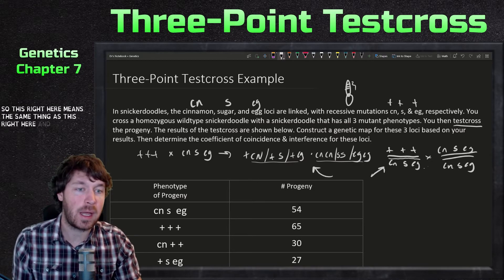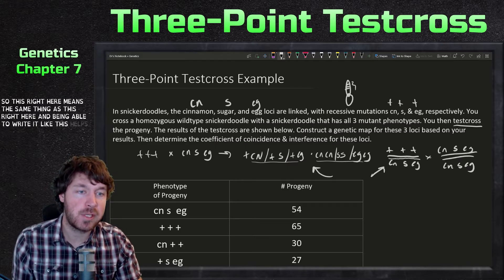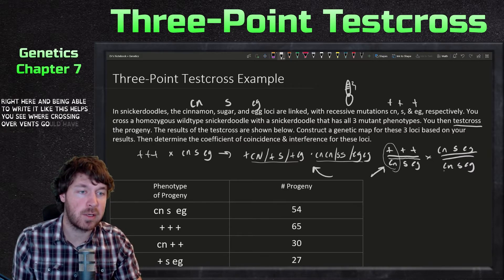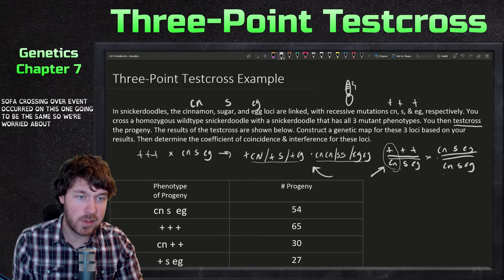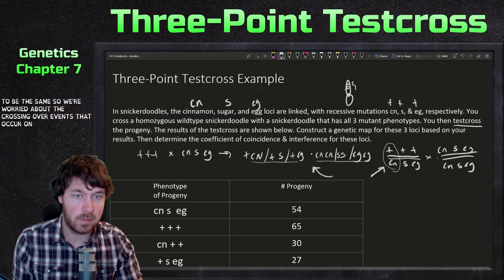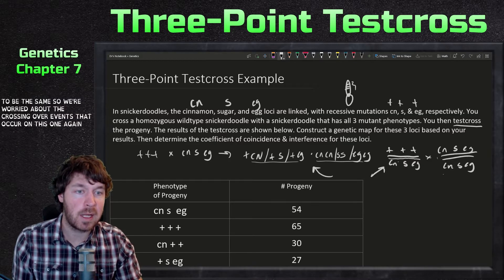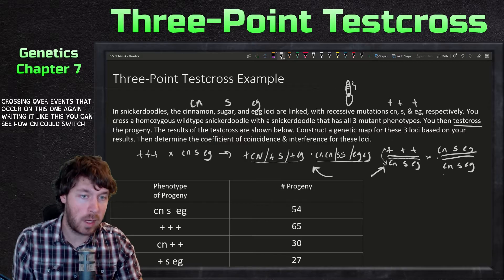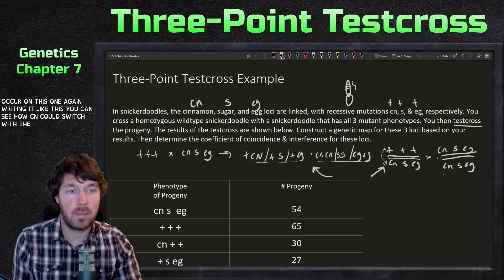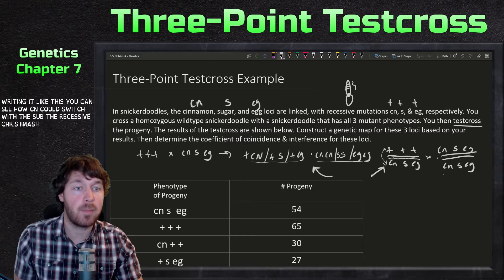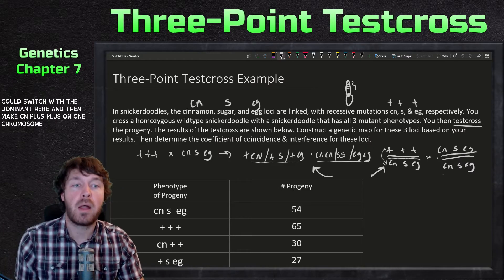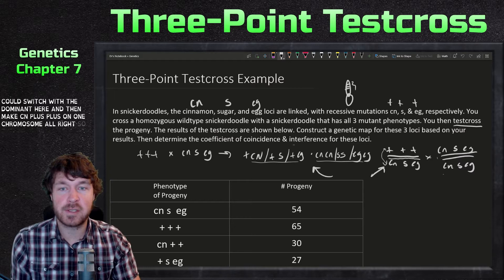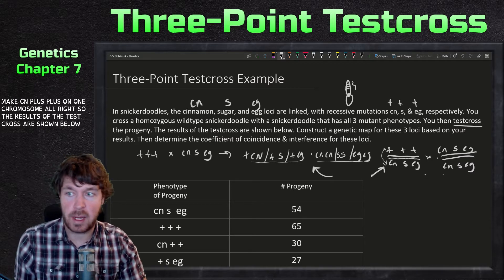Writing it out like this helps you visualize where crossing over events could occur. Crossover events on the homozygous recessive chromosome don't matter — we're only worried about crossover events on the heterozygous chromosome. You can see how cn could switch with the dominant allele, making cn plus plus on one chromosome.